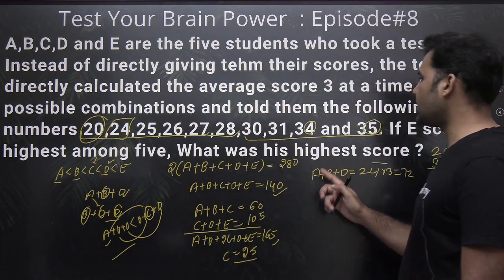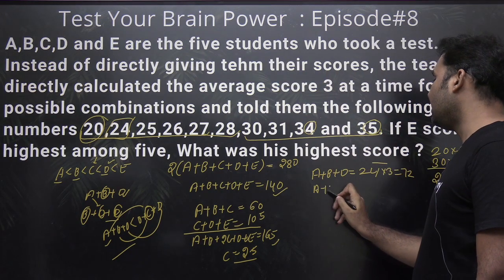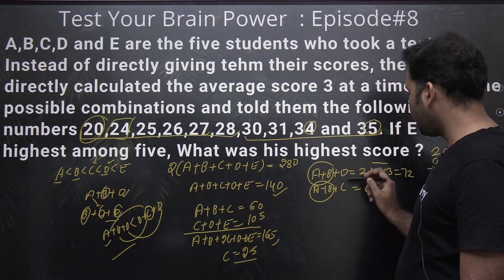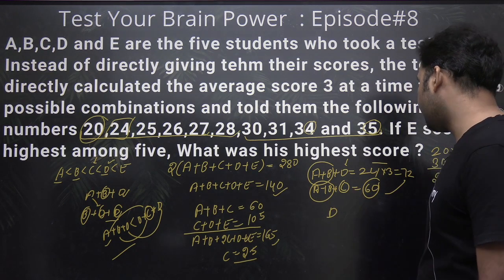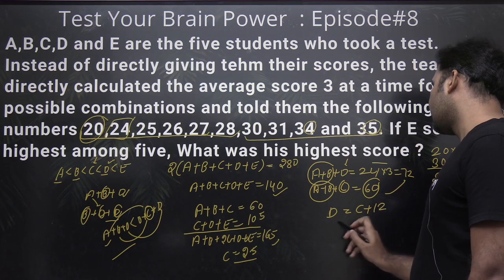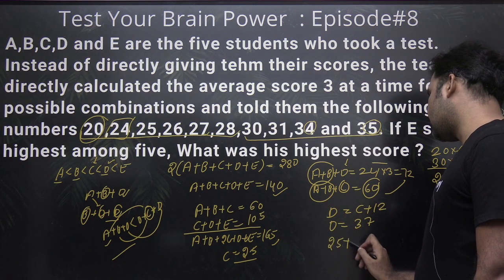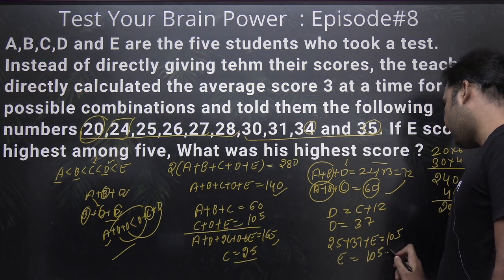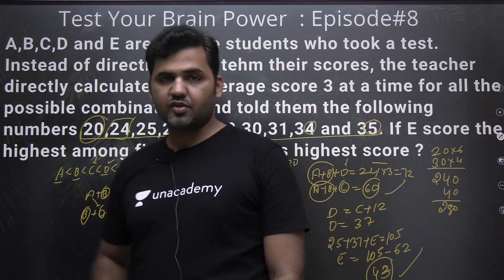The second lowest average of 24 represents A, B and D, confirming A+B+D = 72. Now putting the values into C+D+E = 105: 25 + 37 + E = 105, so E = 105 − 62 = 43. Therefore E's highest score is 43 — that is the correct answer.